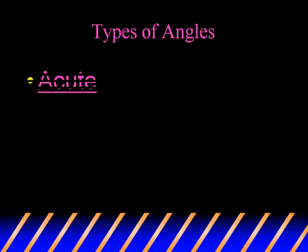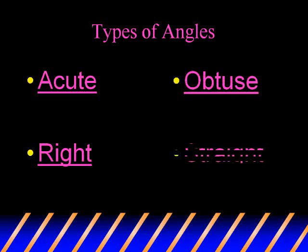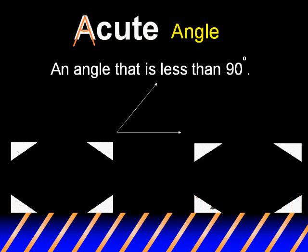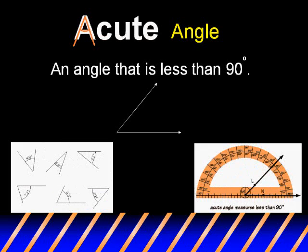The types of angles we're covering in school are acute, right, obtuse, and straight. An acute angle is an angle that is less than 90 degrees. Here are some examples of acute angles. Note the mnemonic in the word acute to help you remember what the acute angle looks like.